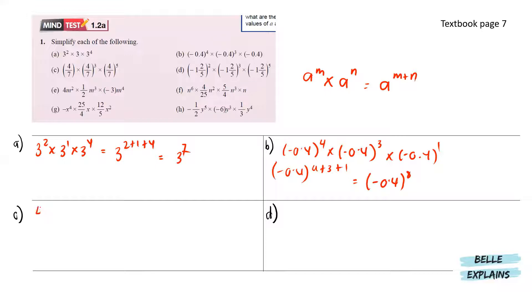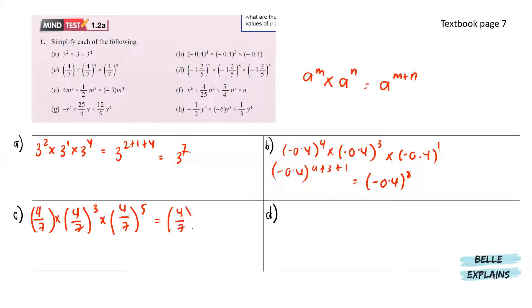Next for c, we have 4 over 7 times 4 over 7 to the power of 3 times 4 over 7 to the power of 5. So that will give us 4 over 7 to the power of 1 plus 3 plus 5, which gives us 4 over 7 to the power of 9.